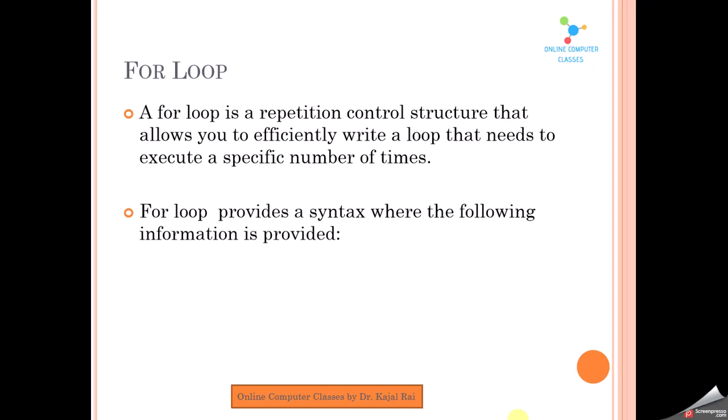The for loop provides a syntax where specific information is provided. As we studied, in the while loop a condition statement is there, the while keyword is there, and many other things. Similarly in the for loop, some things are very important — for example, a condition. It is a boolean condition, whether in a while loop or for loop, because it always answers in true or false. A condition can only be true or false; that is why it is called a boolean condition.